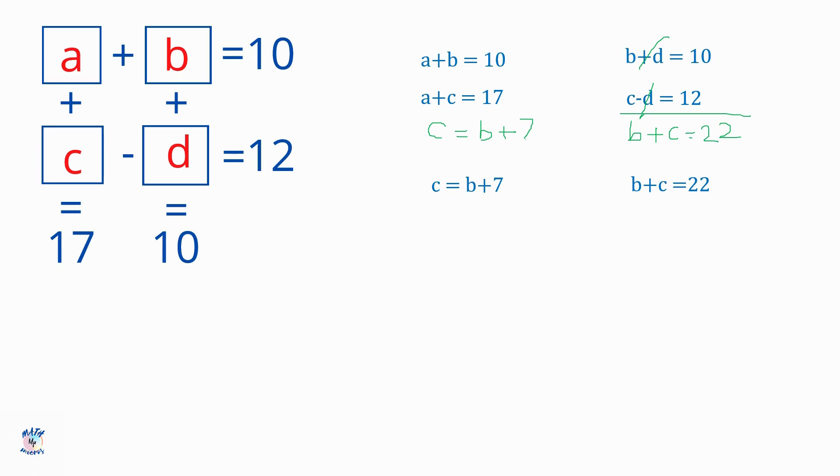Now, what I can do with these two equations? See, I know C is equal to B plus 7. So what I'm going to do, I'm going to use this in this equation. So instead of this C, I'm going to put B plus 7. So instead of C in B plus C equal to 22, instead of C, I'm going to put B plus 7.